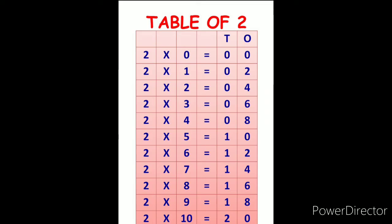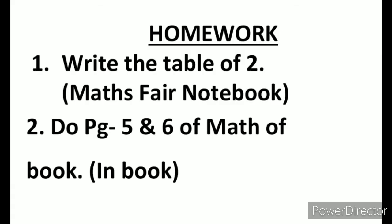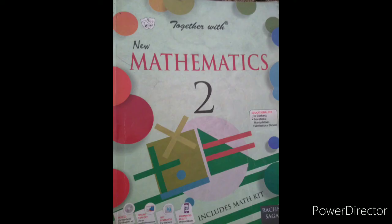Now students you have to recite this table of two five times, learn it and then write it in your maths fair notebook. And another homework I am giving you, that is page five and six of your maths book, the green book which is named Together with Maths. You have to do page number five and six in the book itself. And tables you have to do in fair notebook. Now take care and bye bye.